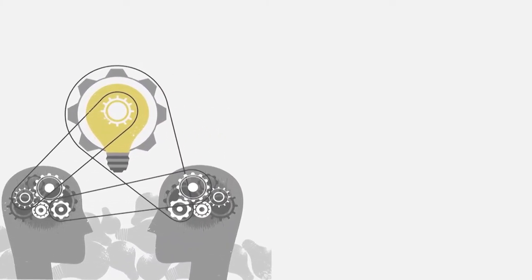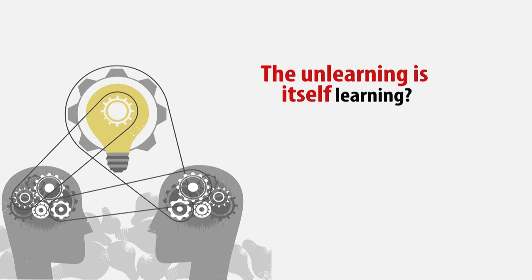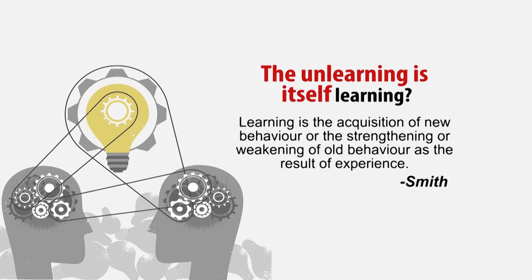Now the next question is: is unlearning itself a form of learning? Smith in his definition said that learning is the acquisition of new behavior or the strengthening or weakening of old behavior as a result of experience. Here Smith wants to say that it is not necessary that in learning we always acquire something new — sometimes abandoning or forgetting weak old behavior is also considered as learning.